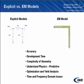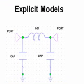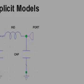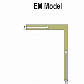By an explicit model, I mean a model which someone has developed, and typically these models have lumped elements and possibly distributed elements like transmission lines — you can see one up here on the upper left. An EM model is just straight out of an EM simulator, and here we have a simple bend with two ports.